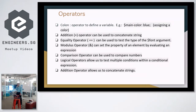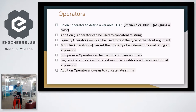So in terms of operators, what are the operators available? There's the colon, which you use to define a variable and give it parameters. There's an addition operator you can use to concatenate strings, and an equality operator to test the type of a given argument. The modulus operator can set the property of an element by evaluating an expression, and the comparison operator can be used to compare numbers. Logical operators allow us to test multiple conditions within a conditional expression — checking whether two functions are true, whether colors or strings match. Addition operators allow us to concatenate strings.